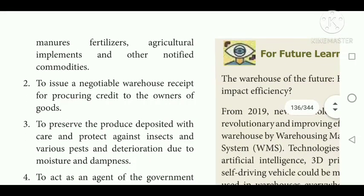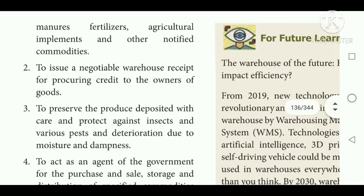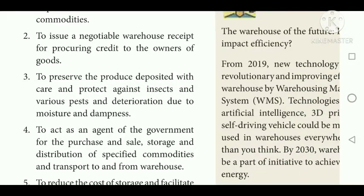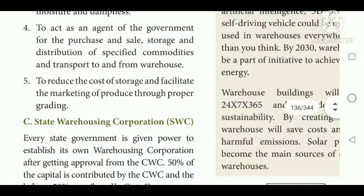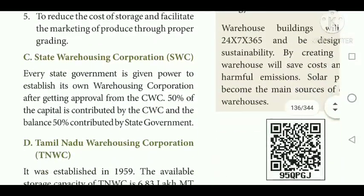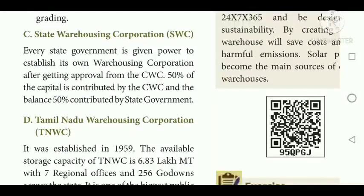Further functions of the Central Warehousing Corporation: issuing negotiable warehouse receipts for procuring credit to the owner of goods; preserving products deposited with care against insects and various pests; acting as an agent for the government; and reducing the cost of storage facilities. State Warehousing Corporation (SWC): every state government is given power to establish its own warehousing corporation after getting approval from the CWC. 50% of the capital is contributed by the CWC and the remaining 50% by the state government. Tamil Nadu Warehousing Corporation (TNWC) was established in 1959.